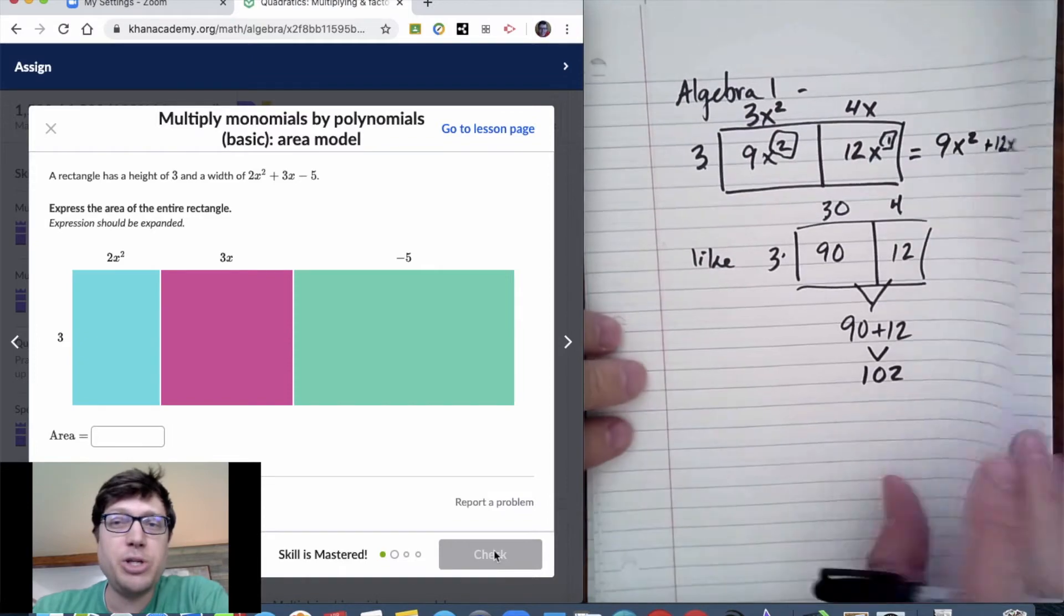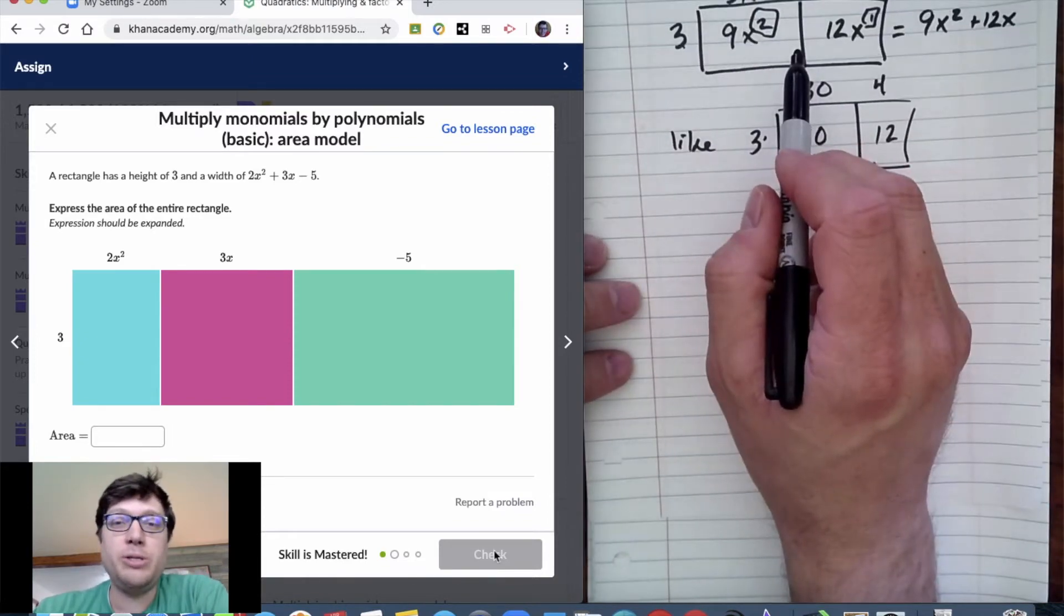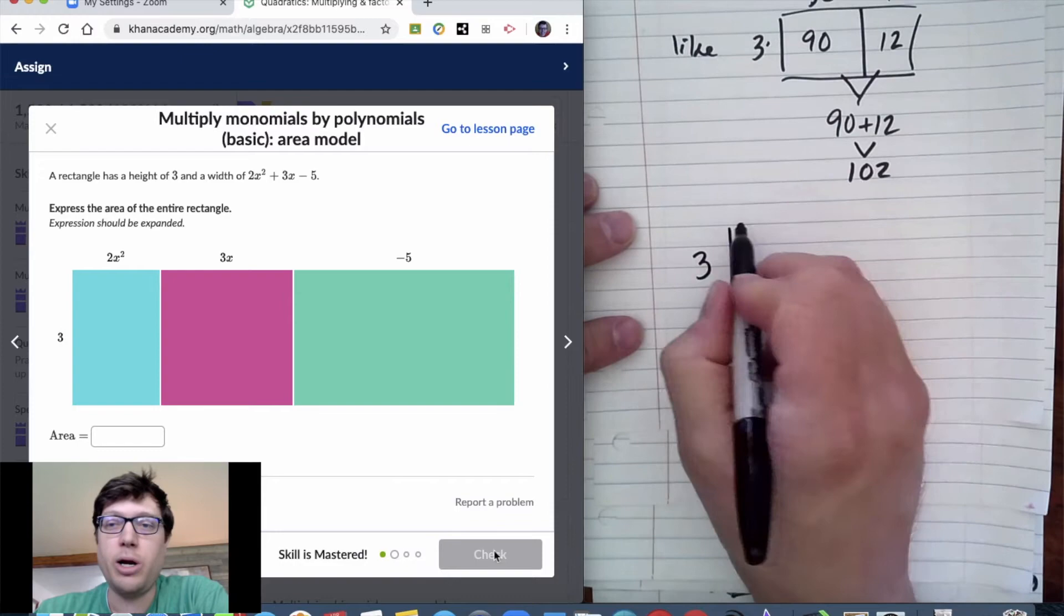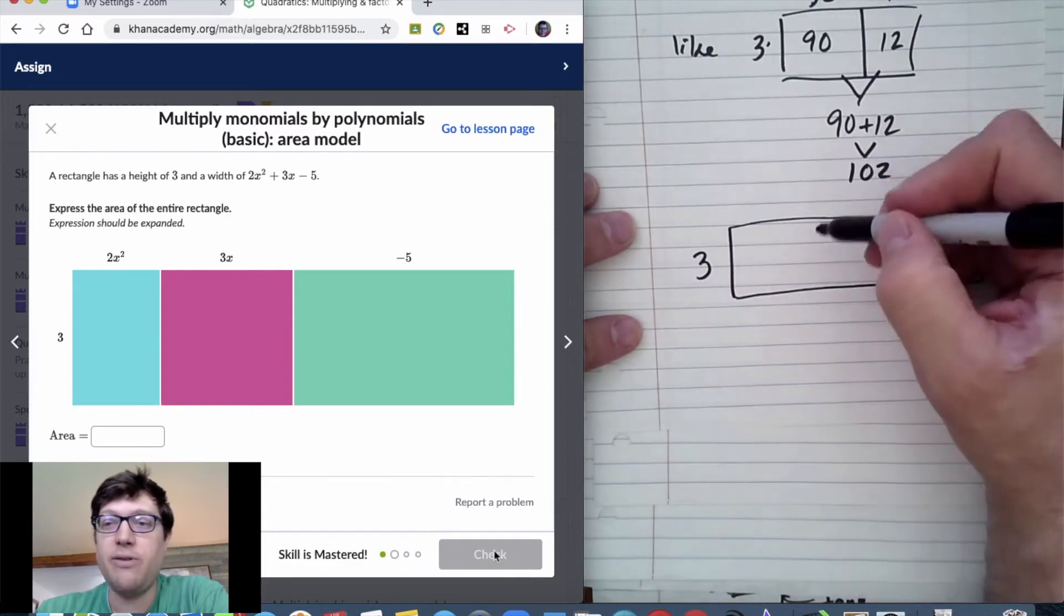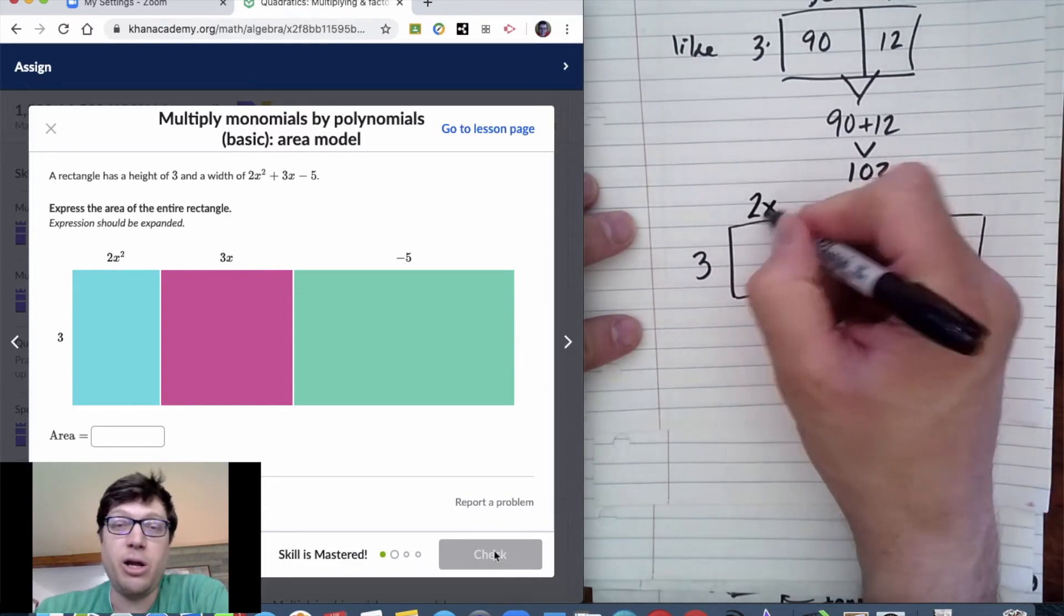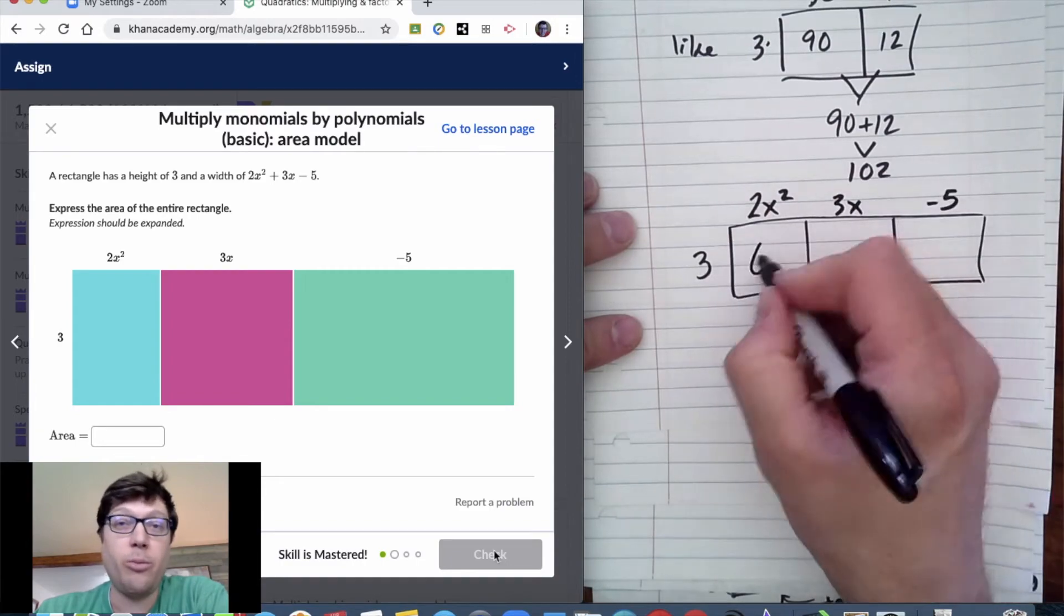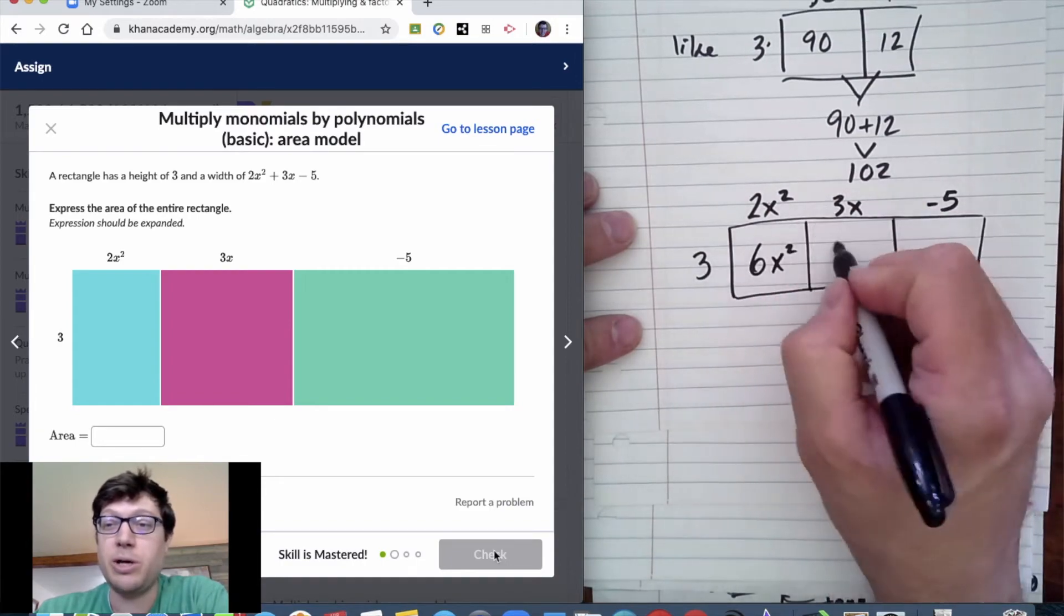The expression can be longer than two terms. This one is a three-term expression, 2x² + 3x - 5, which means that our rectangle, just for the area model, is broken into three groups because of the number of terms in 2x² + 3x - 5.